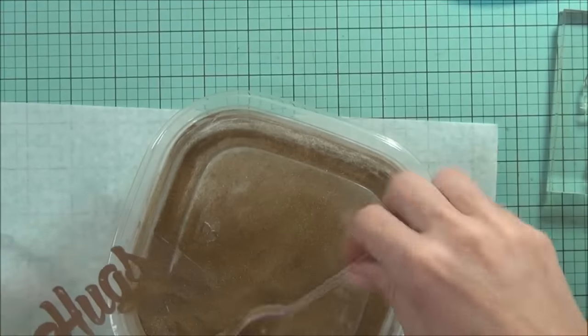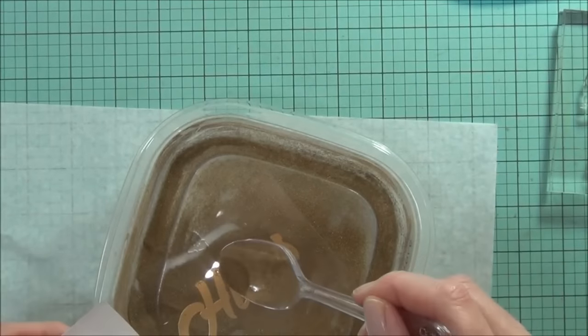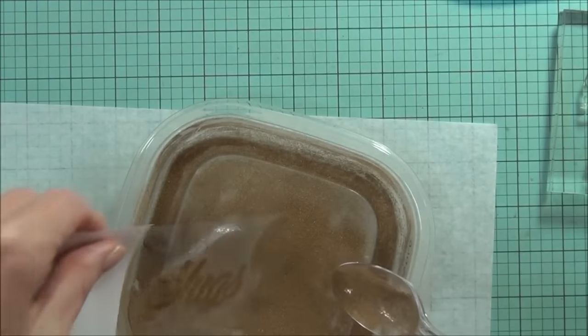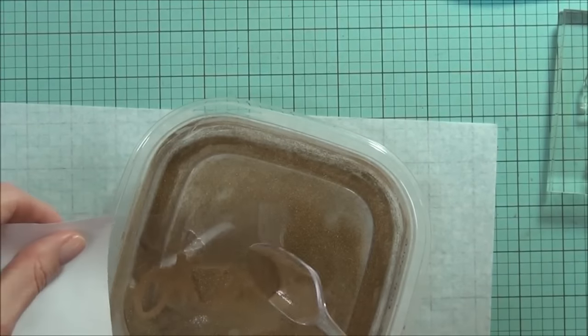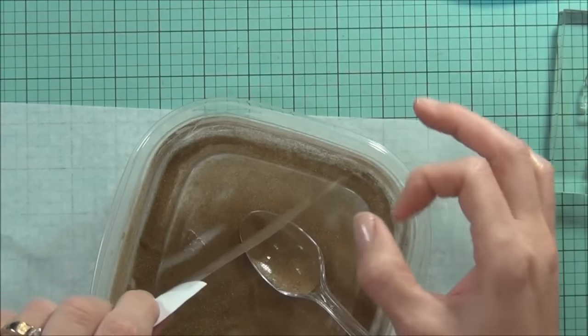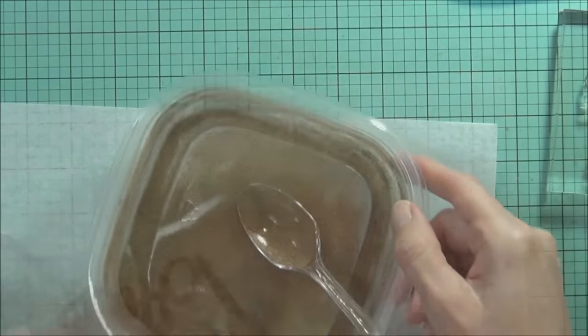There's a couple of spots that didn't actually grab the embossing powder, so I've got my Versamark marker pen there and I just added a couple of spots over those and added more embossing powder to those and then hit it again with the heat tool.